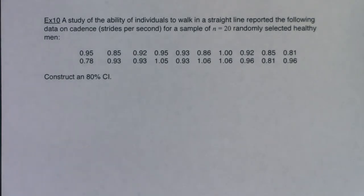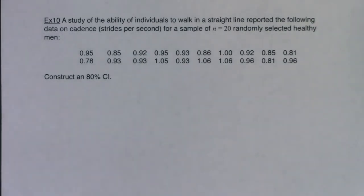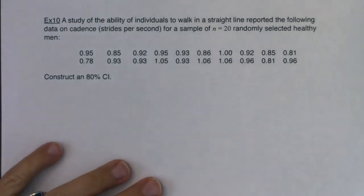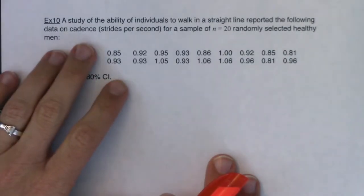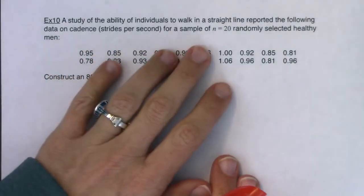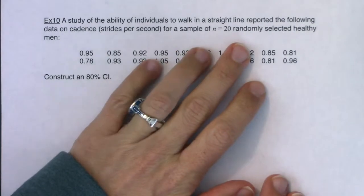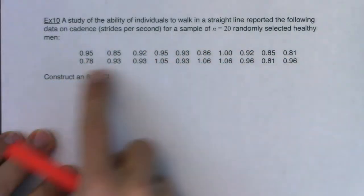Let's take a look at another confidence interval. The first thing to do is figure out what land you're in: am I in mean land or proportion land? Framed another way, do I have a numerical variable or a categorical variable? A study of the ability of individuals to walk in a straight line reported data on cadence — strides per second — for a sample of 20 randomly selected healthy men.